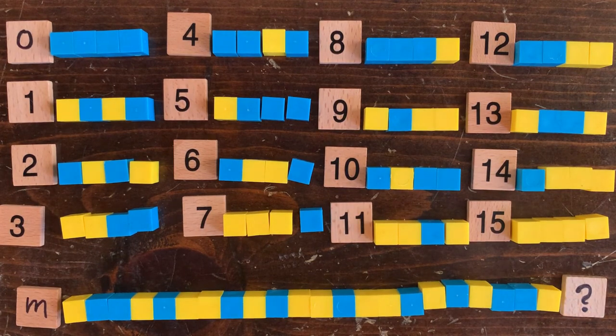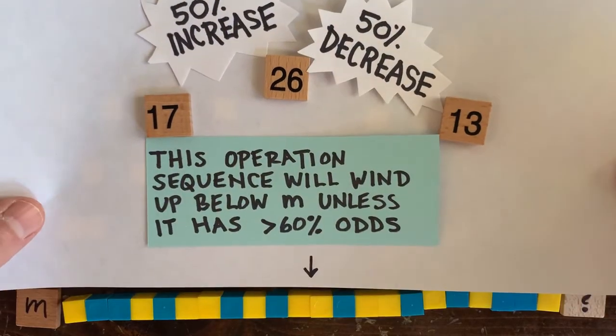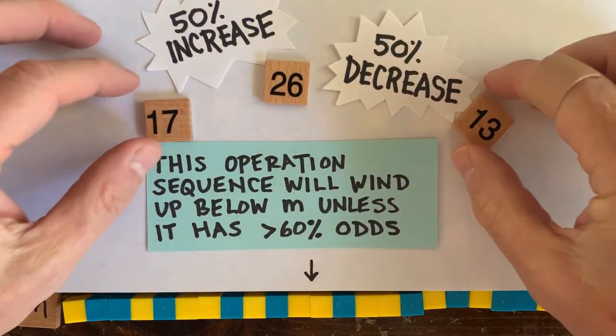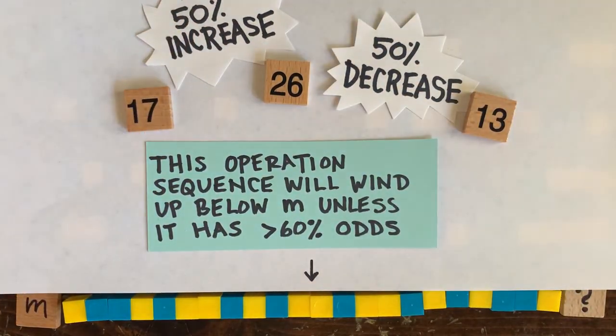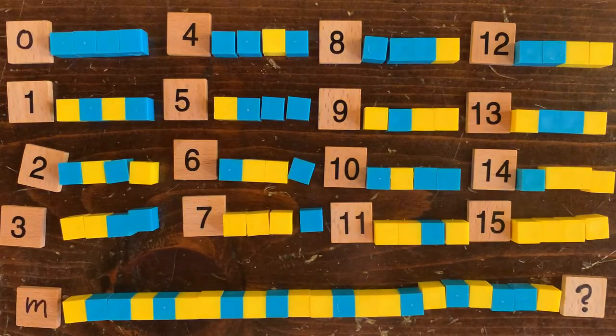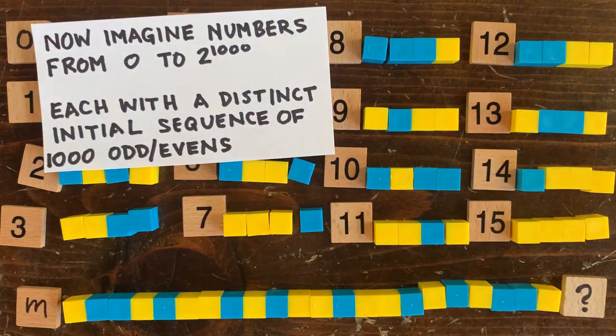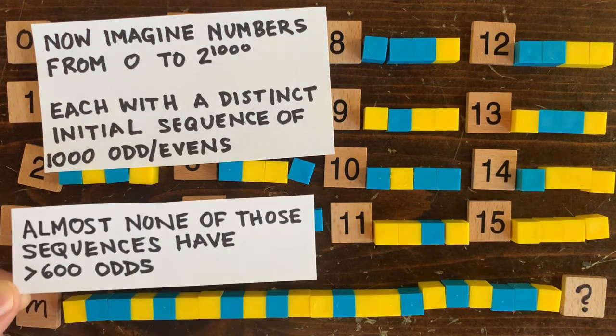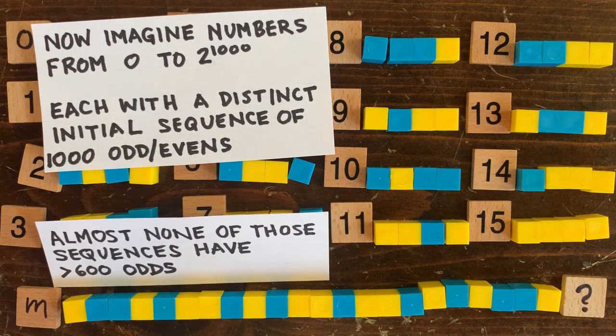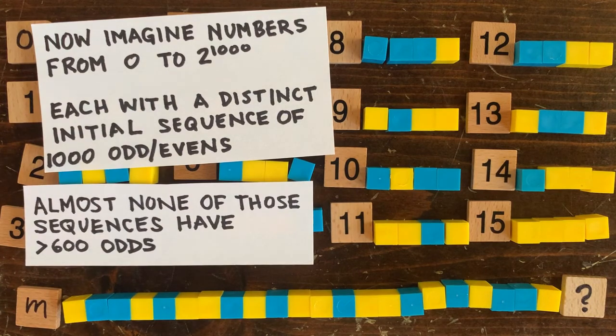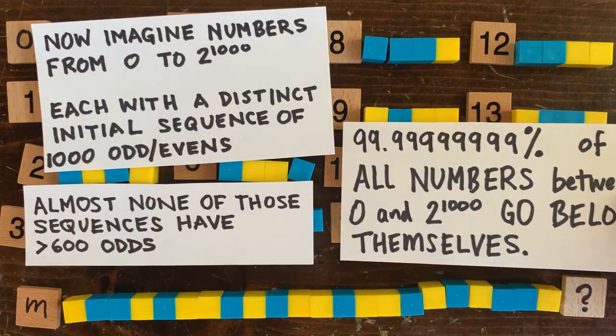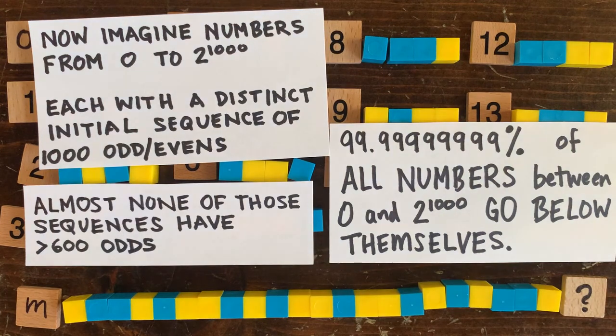Well to stay above m, the sequence has to have at least 60% odds. That's because with 50-50 odds and evens, the sequence is going to trend downwards. Now let's imagine not just numbers up to 15, but numbers up to 2 to the thousandth, each number having its own initial operation sequence of 1,000 odds and evens. Well, very, very, very few of those sequences contain 60% odds. So we conclude that at least 99.99999999% of all numbers less than 2 to the thousandth go below themselves after just 1,000 steps.